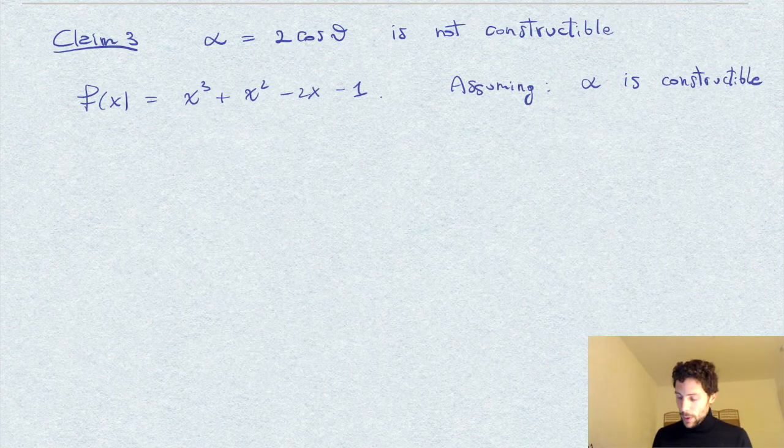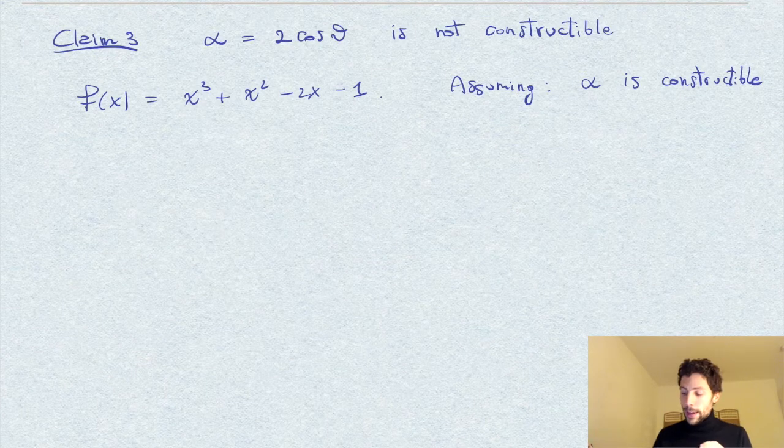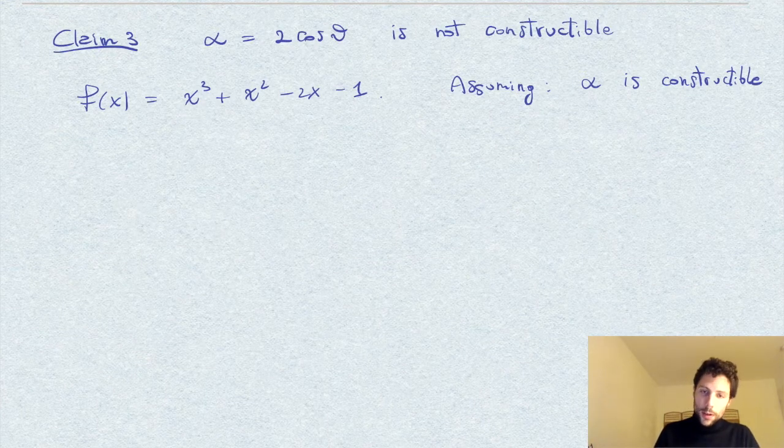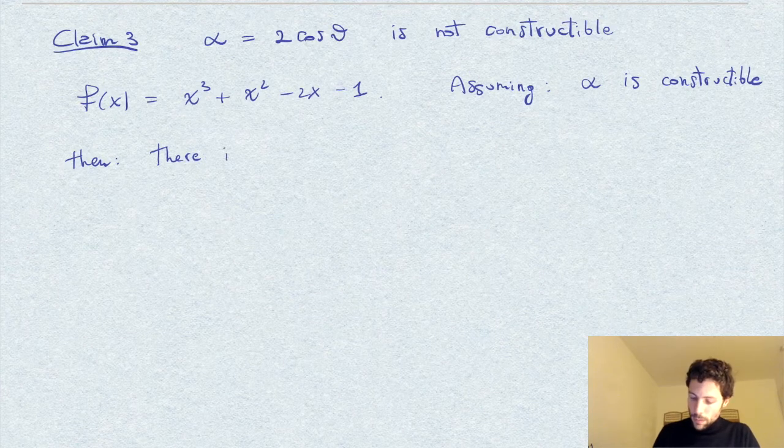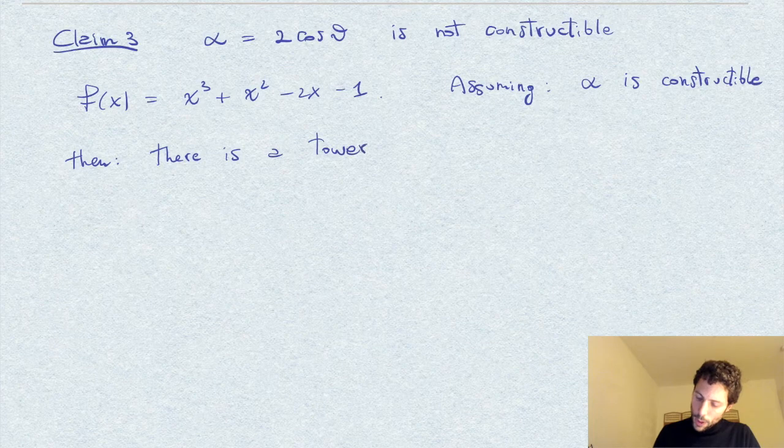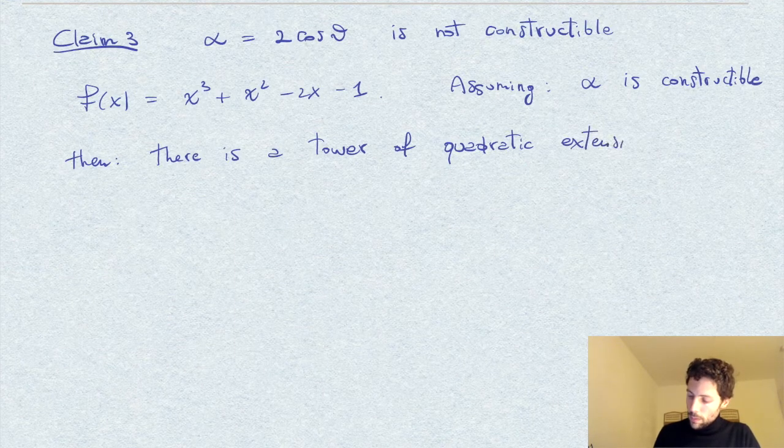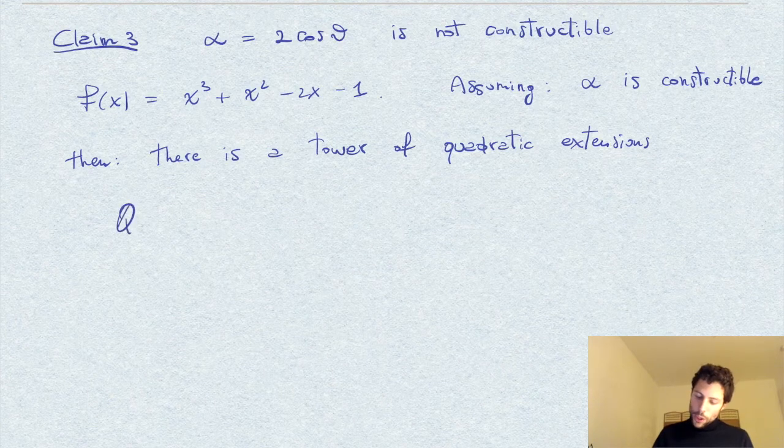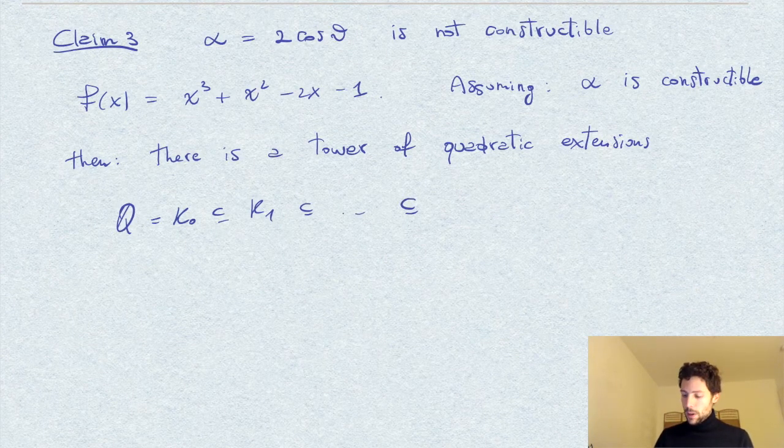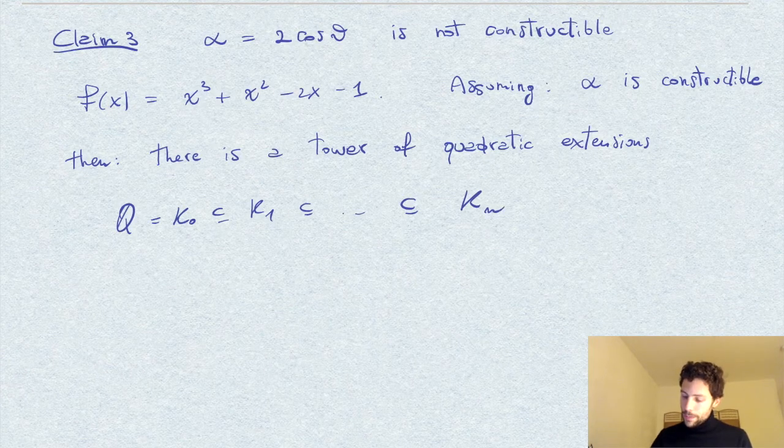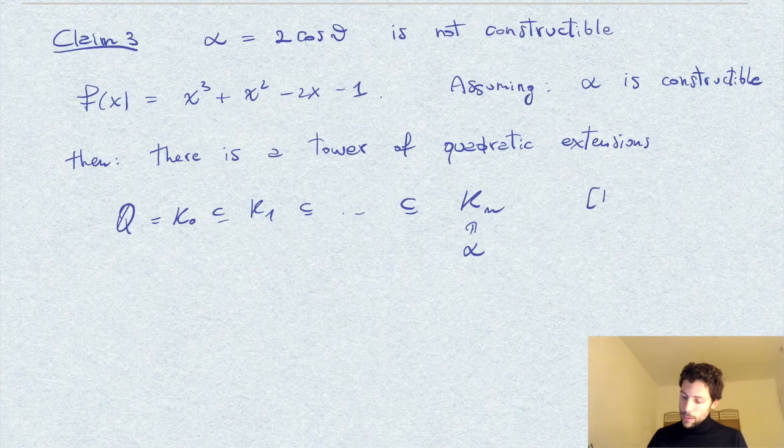By the theory, we know that alpha lies in an extension at the end of a tower of extensions of degree two. So we know that there is a tower of quadratic extensions. The first field would be Q = K₀, then K₁, and so on, and alpha lies in some extension K_n of Q. These are quadratic in the sense that successive degree is always two.